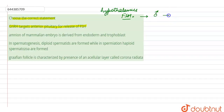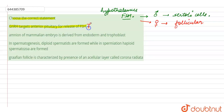Follicle stimulating hormone, in the case of males, acts on the Sertoli cells, while in females it acts on the follicles and helps in follicular development during the follicular phase of the menstrual cycle. So this is the true option.